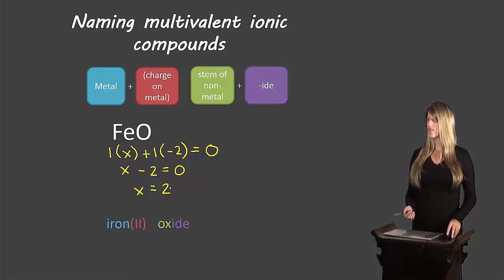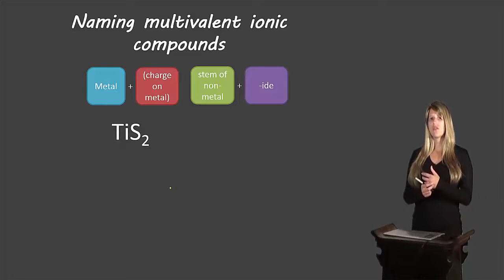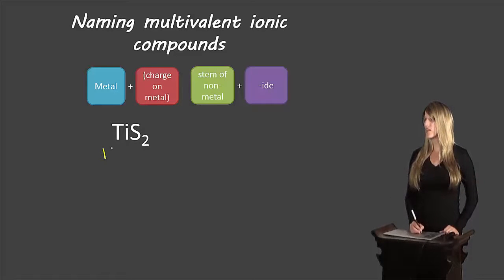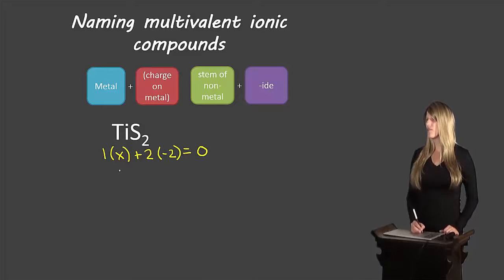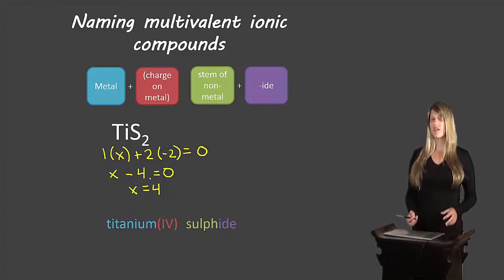This last example shows why we can't use the crossing-over rule here — the zero sum rule is really the only reliable method. Using crossing over, it might look like titanium 2 sulfide, but that's not correct. Using zero sum: 1 titanium of unknown charge x, plus 2 sulfurs at -2 each, must equal zero. So x + (2 × -2) = 0, giving x - 4 = 0, so x = 4. The charge on titanium is 4, not 2. This compound is named titanium(IV) sulfide.